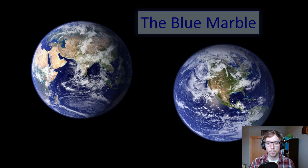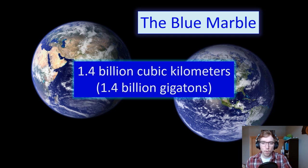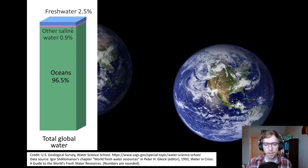So if we were to look here at our big blue marble we call Earth, we can see that there are 1.4 billion cubic kilometers or 1.4 billion gigatons of water on the surface or within our planet. That is a pretty unfathomable number, but let's break that down just a little bit. Here we can look at the distribution of fresh water to other water. There's 2.5 percent fresh water on our planet, other saline water constitutes about 0.9 percent, oceans constitute 96.5 percent of the total global water by volume.